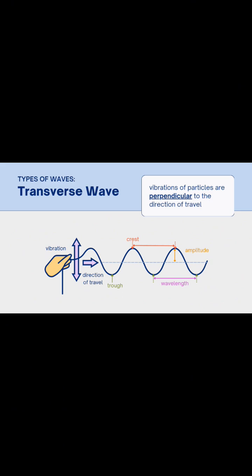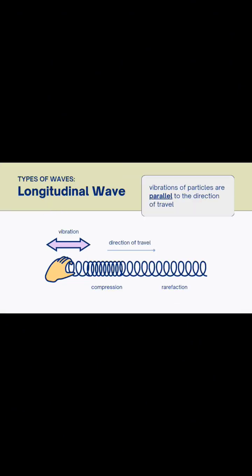Other examples of transverse waves include light waves, water ripples, and S waves from earthquakes. In a longitudinal wave, the vibrations of the particles are parallel to the direction the wave travels.